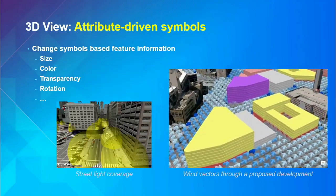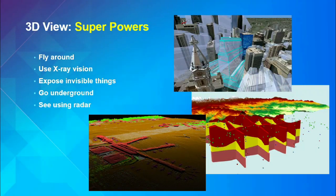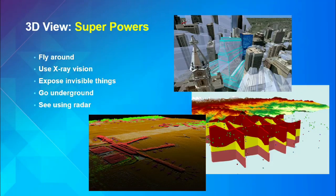The number one cool thing about 3D views is that you get superpowers. You get to fly around — everybody has a jet pack. You can use your x-ray vision and see through things; transparency works. You can expose invisible things — a shadow being cast from a building can be created as an object and represented visually, something impossible to see in the real world. You can go underground and see everything you want. You can see using radar — LiDAR data is really big in 3D; they're just little tiny dots, returns from laser scans, and you have that power in 3D.